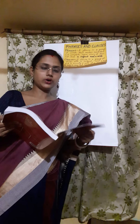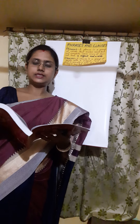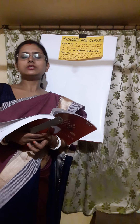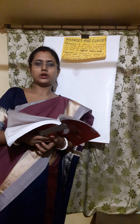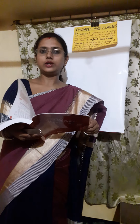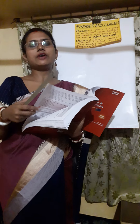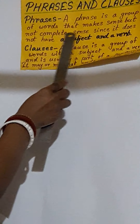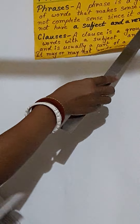So look at your book everyone. Examine the group of words 'in a corner'. It makes sense but not complete sense. The word 'in a corner' — what meaning are you getting? It is giving you some sense that something is there in a corner, but what is there we don't know. So it is giving you some sense but not complete sense. Such a group of words which makes sense but not complete sense is called a phrase. So now let us see here the definition of phrase. A phrase is a group of words that makes sense but not complete sense, since it does not have a subject and a verb.